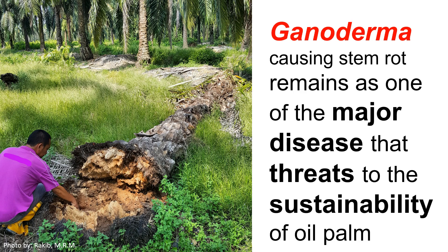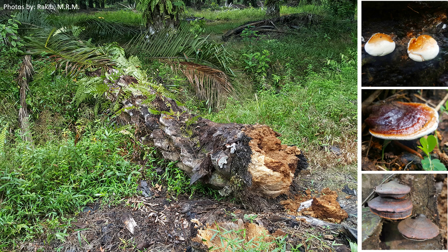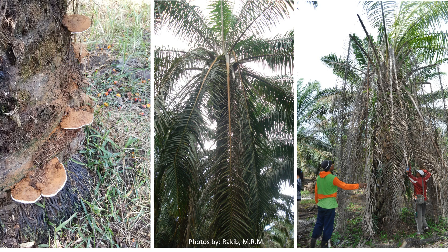We know that oil palm is very important. However, the sustainability of the industry is threatened by Ganoderma species causing stem rot. As shown here, the oil palm has collapsed and the base of the stem is already decayed by Ganoderma. Another picture shows a collapsed palm where the leaves are still green, meaning it is newly collapsed. You can see the fruiting body of Ganoderma at the base of the stem, as well as multiple basidiomata of Ganoderma on an infected palm.